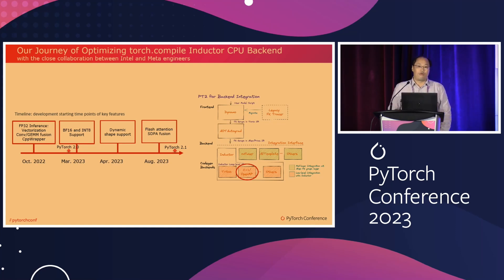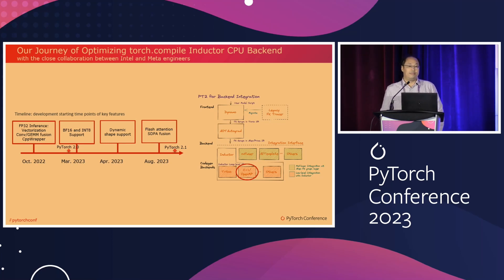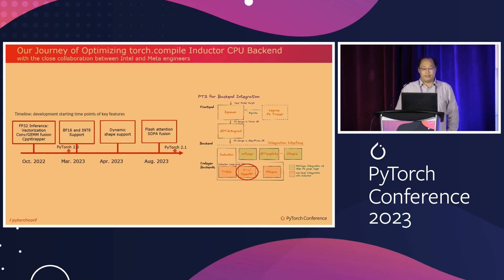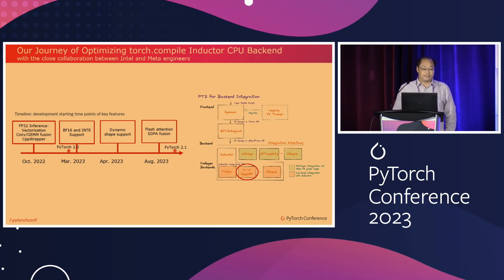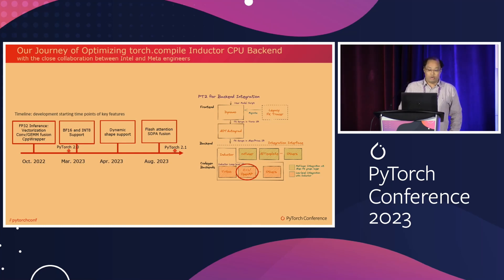This is work resulting from close collaboration between Intel and Meta engineers. We initiated the effort approximately one year ago, starting with FP32 inference. After PyTorch 2.0, we expanded support to include more data types like BF16 and int8 inference, added dynamic shape support, and scaled dot-product attention fusion for transformer models. All of these features have been successfully integrated into PyTorch 2.1.